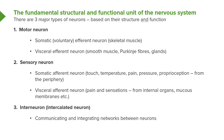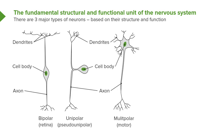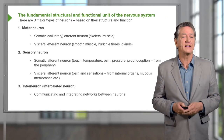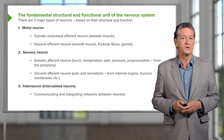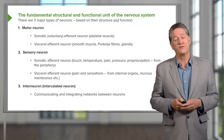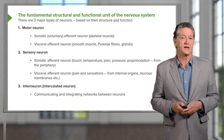Besides motor neurons and sensory neurons, there are interneurons — they're much smaller, sometimes called intercalated neurons or integrative neurons. Their job is to communicate between both sensory and motor neurons and between various other neurons in the spinal cord and brain, creating integrating networks so that information brought into the brain or spinal cord is transferred to other neurons for processing.